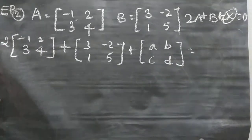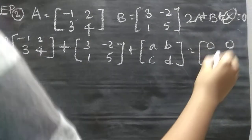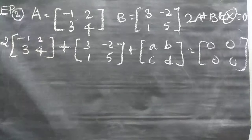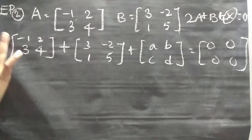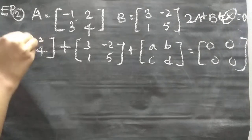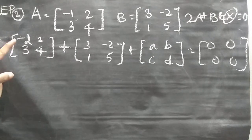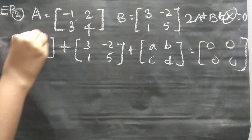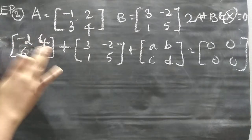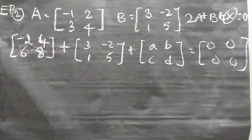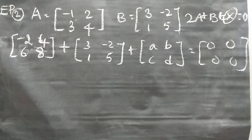So [A, B; C, D] equals the zero matrix [0,0;0,0]. Now, 2A means 2 multiplied by the full matrix: 2×(−1) = −2, 2×2 = 4, 2×3 = 6, 2×4 = 8. Now we will add this up completely with B.